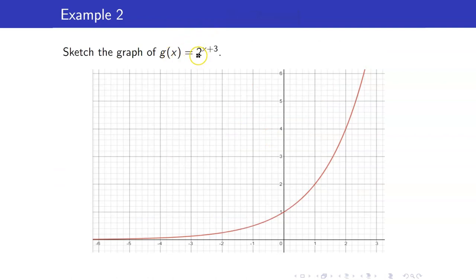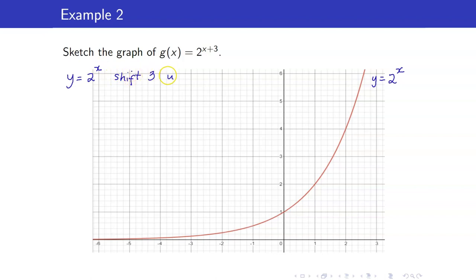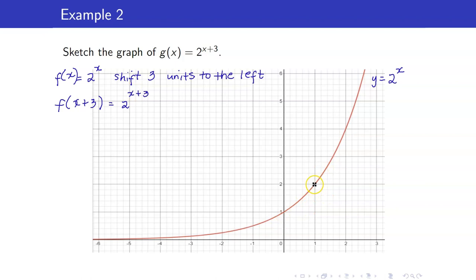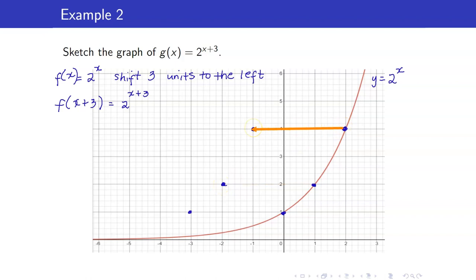Next, I want to sketch the graph of y equals 2 to the x plus 3. How is this related to y equals 2 to the x? 2 to the x plus 3 is just the graph of y equals 2 to the x shifted 3 units to the left. Because if f of x is 2 to the x, your 2 to the x plus 3 is f of x plus 3. I will get the points 2, 4; 1, 2; and 0, 1, then shift everything 3 units to the left. So 2 becomes negative 1, 1 becomes negative 2, and 0 becomes negative 3.